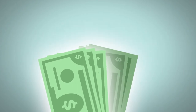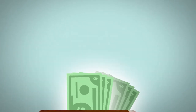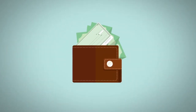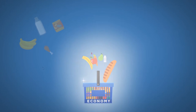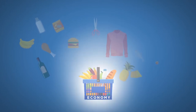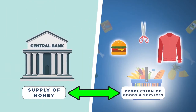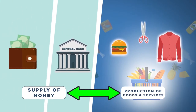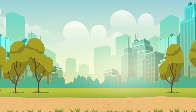This relationship between money — in a variety of forms including cash in a person's wallet and their bank accounts — and the availability of goods and services, is at the heart of Friedman's theory about the cause of inflation.